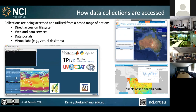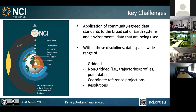Our collections are accessed in several different ways: traditional direct access on a file system for local users at the repository, web and data services through cloud facilities and data portals, as well as virtual laboratories. All of these have to be considered when thinking about our quality standards. And then, as if it wasn't complicated enough, across the wide range of domains we host, each has complicated factors to consider — many gridded datasets, but also non-gridded, different coordinate reference projections, and varying resolutions.